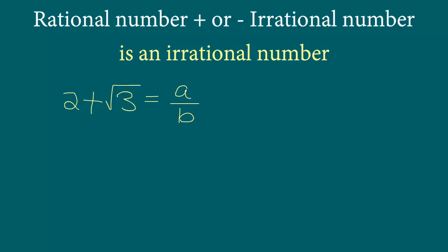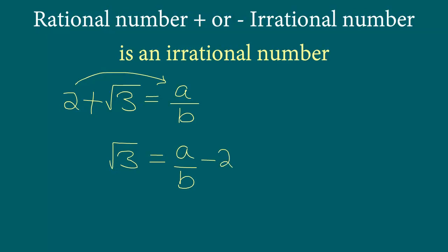Now, what we do is we will try to separate out square root 3. So we will say square root 3 equals — we will get the 2 on the other side of the equality sign — so we will get a/b minus 2.